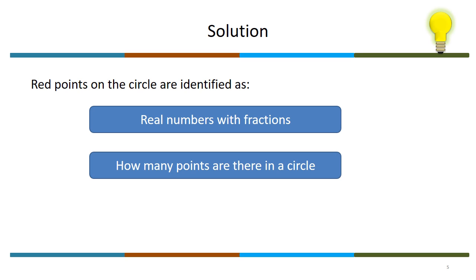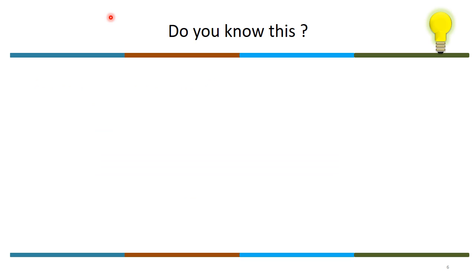How many points are there in a circle? Certainly it is infinity. Now let us answer a simple question: how many numbers are there between zero and one? Yes, the answer is infinity.